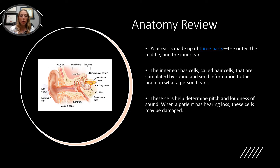First, I want to go into a very quick anatomy review of your ear. Your ear is made up of three different parts: your outer ear, which is your ear canal; your middle ear, which is your eardrum and those little bones in there; and your inner ear, which is the cochlea and your balance system. The inner ear has cells called hair cells that are stimulated by sound and send information to the brain on what a person hears. These cells help determine pitch and loudness of the sound. So when a patient has hearing loss, these cells can be damaged.